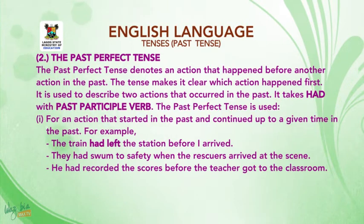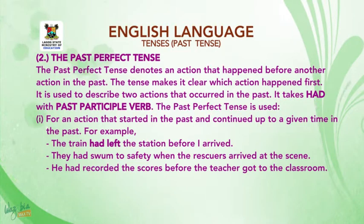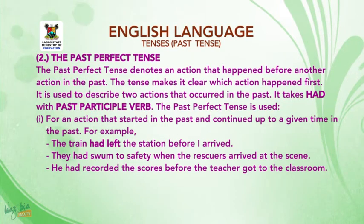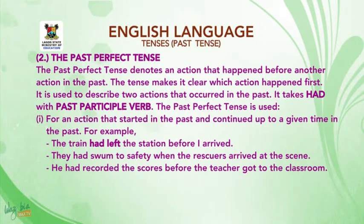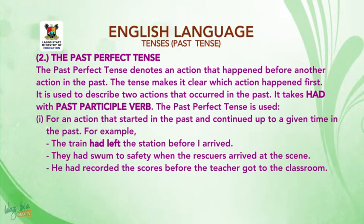Let us look at the uses of the Past Perfect Tense. 1. It is used to indicate an action that started in the past and continued up to a given time in the past. For example: The train had left the station before I arrived. They had swum to safety when the rescuers arrived at the scene. He had recorded discourse before the teacher got to the classroom.